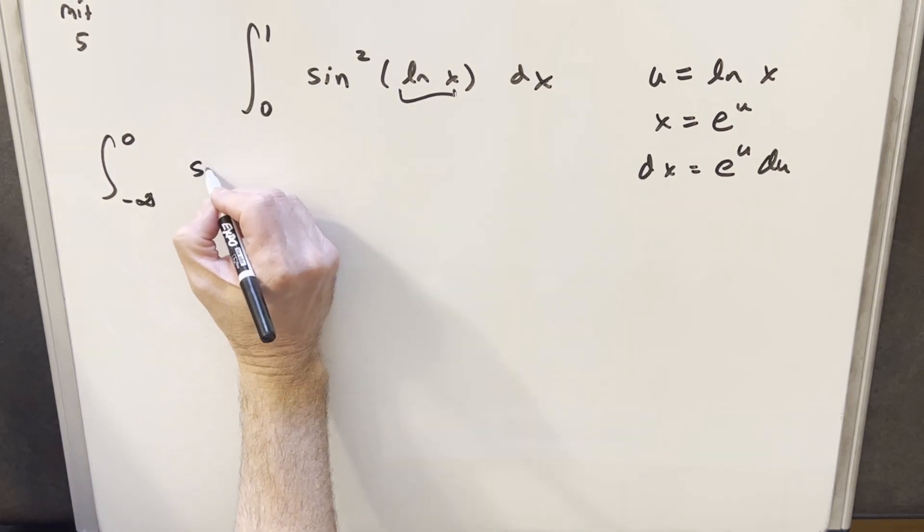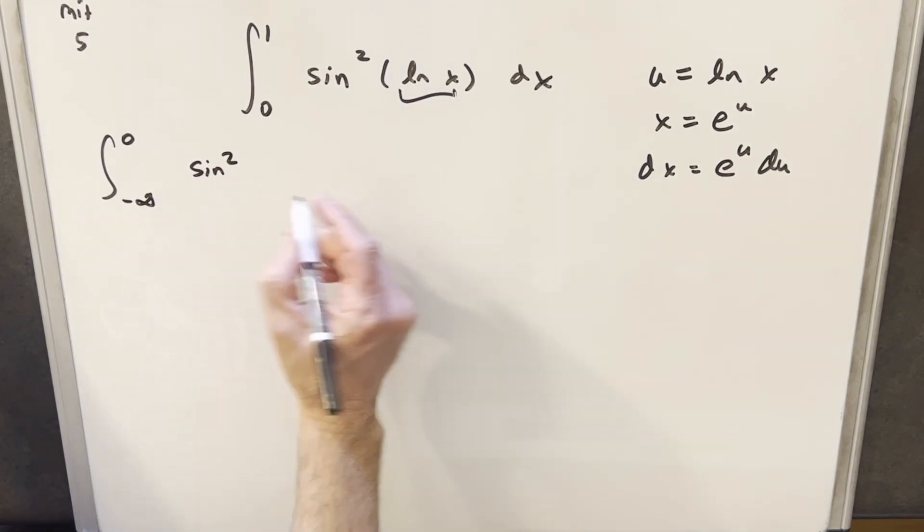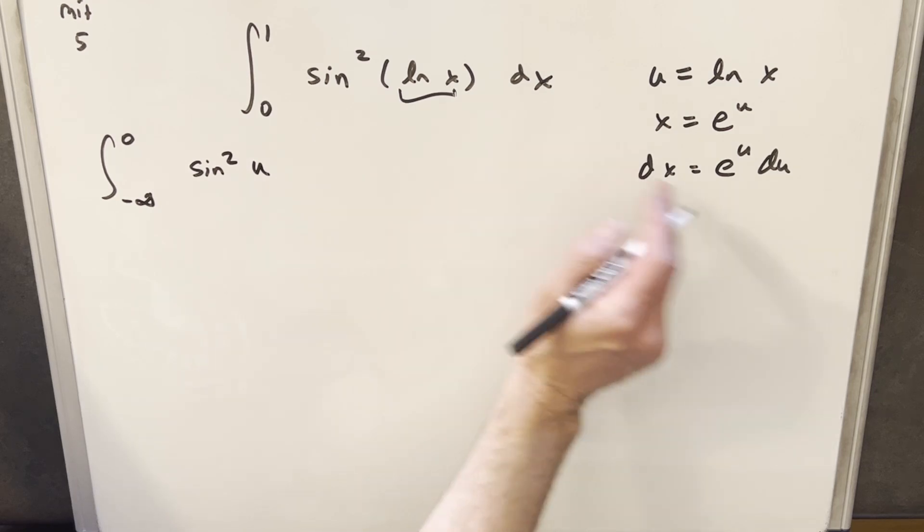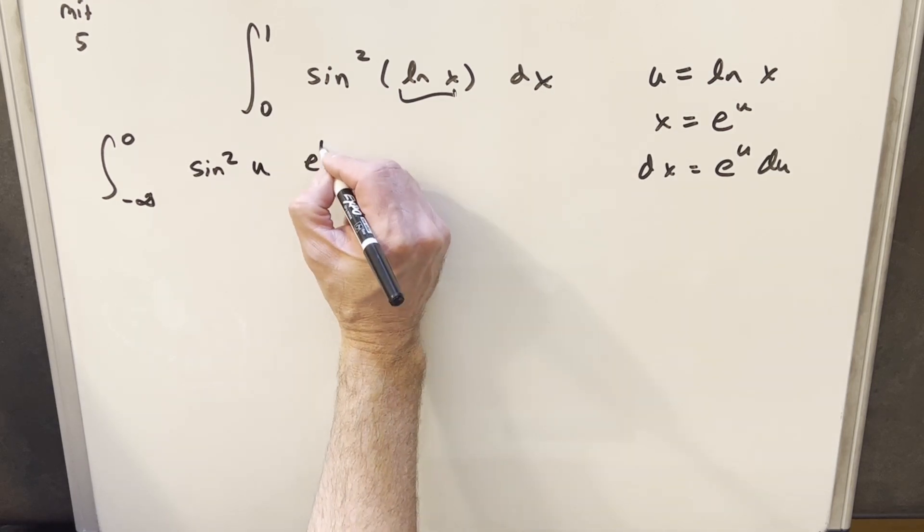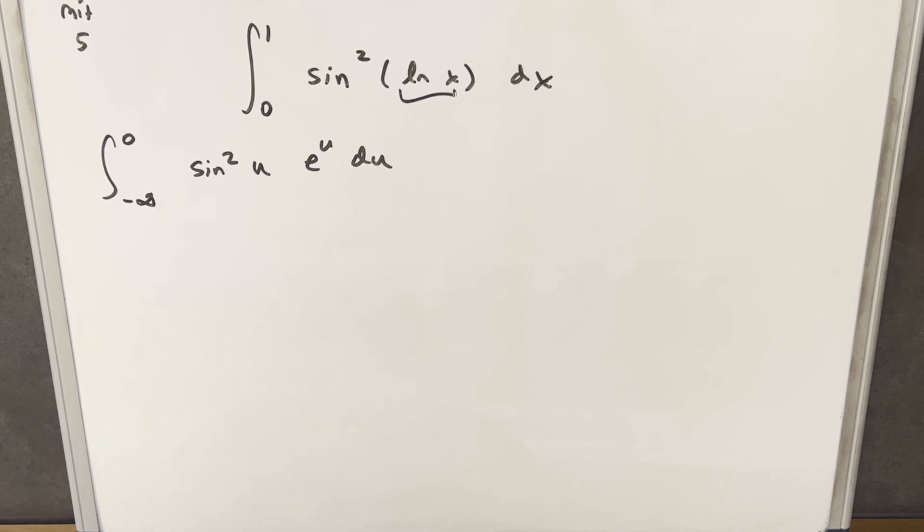Then we'll plug all this stuff in. So we're going to have sine squared, natural log of x is u, and our dx is this thing, so we're just going to have e to the u du. And now I think it's the place where we want to use integration by parts.